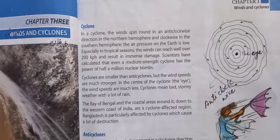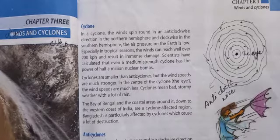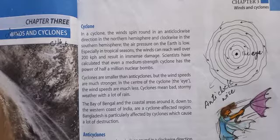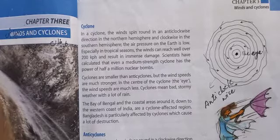Now the next topic on page number 13 is cyclones. Cyclones means Tufan. In cyclones, the winds spin round in anti-clockwise direction in the northern hemisphere, and clockwise in the southern hemisphere. Hemisphere means the half sphere. You know that the earth is imaginary divided into two hemispheres through the equator — the northern hemisphere and the southern hemisphere.